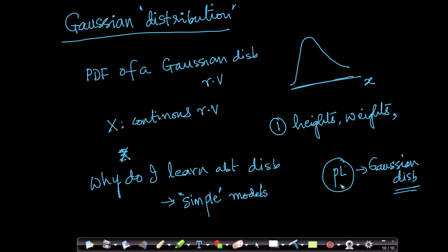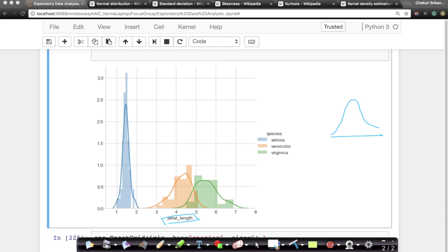Whatever values that you get are basically sampling from the distribution. If some of the terms are alien to you, I promise you will surely understand it. Let us understand Gaussian distribution a little more. By the end of this subtopic, you'll understand everything about distributions.